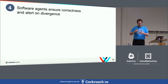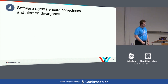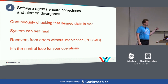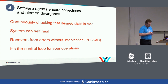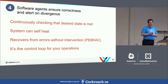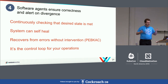The fourth principle: software agents continuously ensure correctness and alert on divergence. You're continuously checking that your running system meets your expectations. The software will tell you whenever reality doesn't match expectations, which means you can self-heal. If a deployment should exist but doesn't, the system makes sure it does. This is not just self-healing from a node going down — it covers broader failures including human errors. It's the control loop for your operations. So: entire system described declaratively, canonical state versioned with Git, approved changes automatically applied, and software agents ensure correctness.